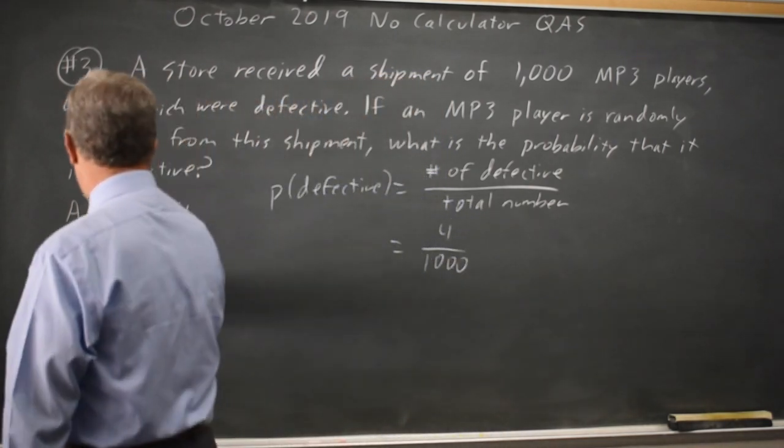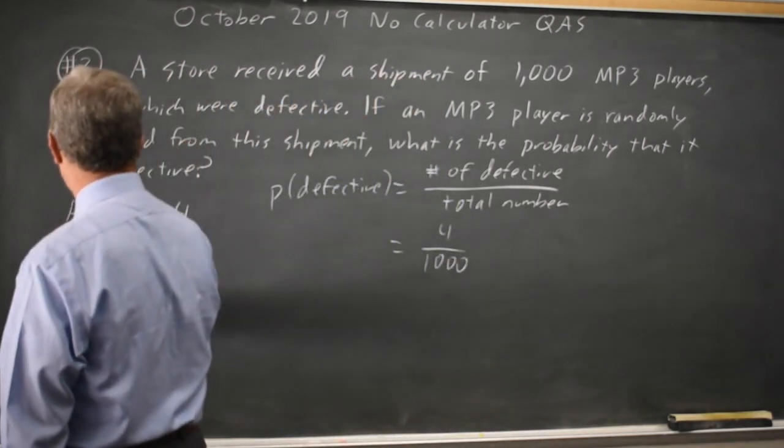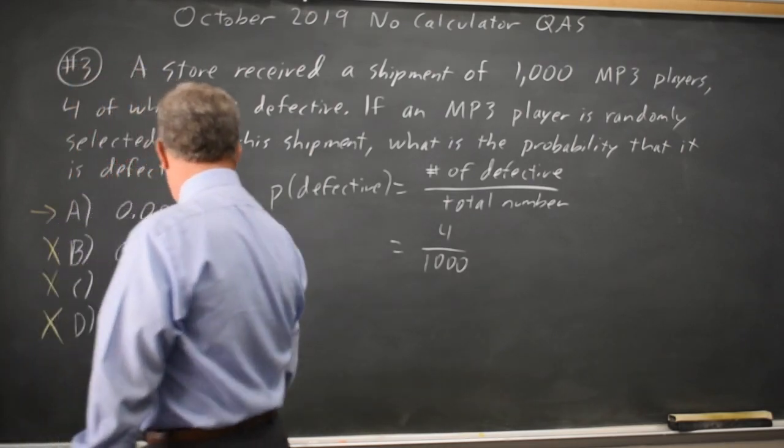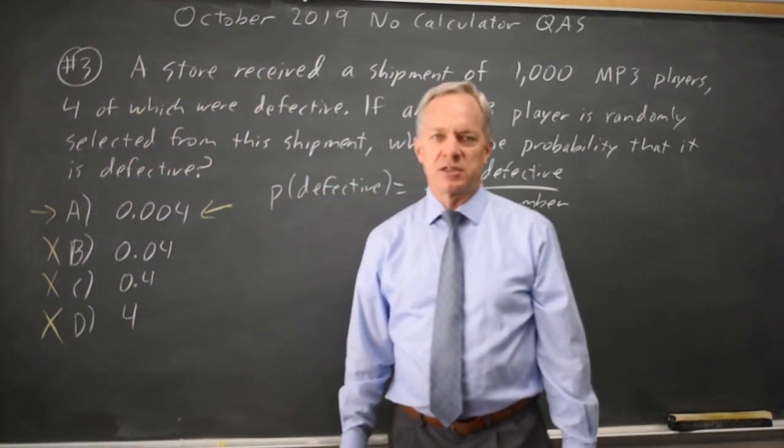Choice C, this is four over 10. Choice B is four over 100. And choice A is four over 1,000. So choice A would be the correct answer.